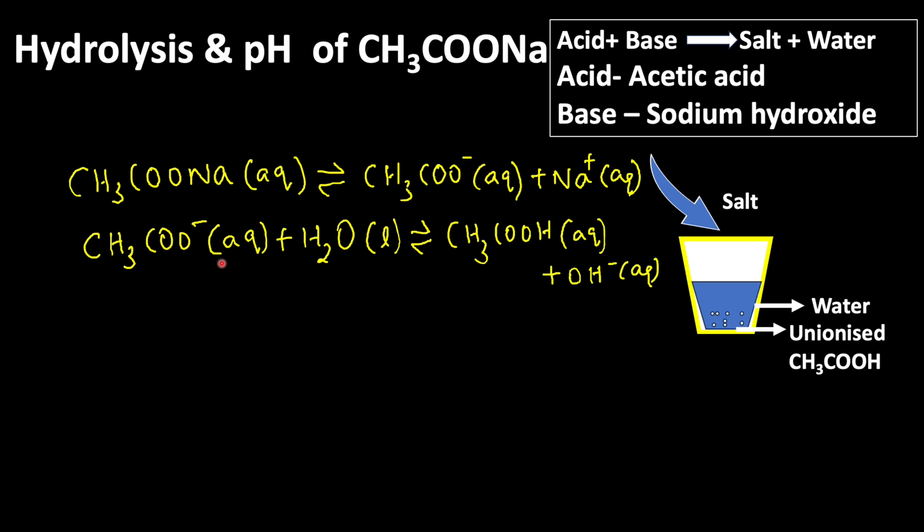So when acetate ion interacts with water molecules, it forms very weak acetic acid and OH- ion concentration. This weak acetic acid stays as unionized acetic acid because it is a very weak acid. It does not undergo ionization completely.